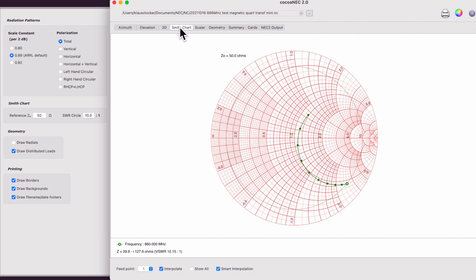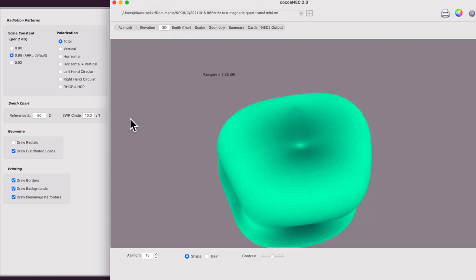Then, we have the impedance in the Smith chart. And then, we see a potato, which is the total radiation pattern in three-dimensional space. In this representation, we have all horizontal, vertical, left-handed circular and right-handed circular components summed up.